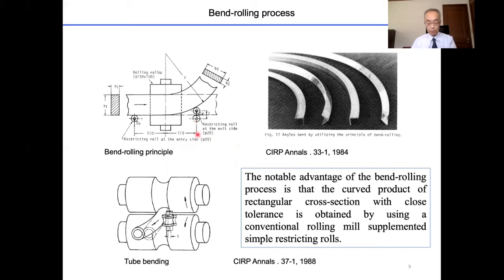The curvature of the product is determined by the position of adjustable restricting roll, and the required force acting on the restricting roll increases in curvature of the product, and decreases remarkably with the increase in the reduction thickness of rolling by rolling. The notable advantage of the bend-rolling process is that the product of rectangular cross-section with close tolerance is obtained by using a conventional rolling mill and also supplemented simple restricting roll. This process is applicable to bend several kinds of sections or pipes.